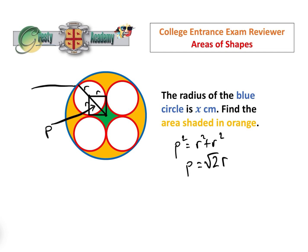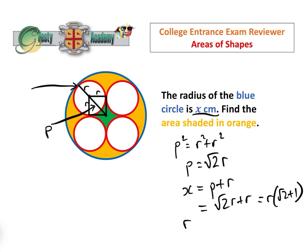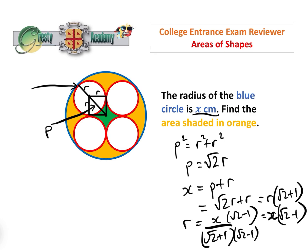We also know that this line is the radius of the blue circle, which is x centimetres. So x equals p plus r, which equals root 2r plus r, which equals r(root 2 + 1). Therefore, the radius of the red circle is r = x over (root 2 + 1). Rationalising by multiplying by (root 2 − 1), that gives us r = x(root 2 − 1), since (root 2 + 1)(root 2 − 1) = 1. That's really useful.